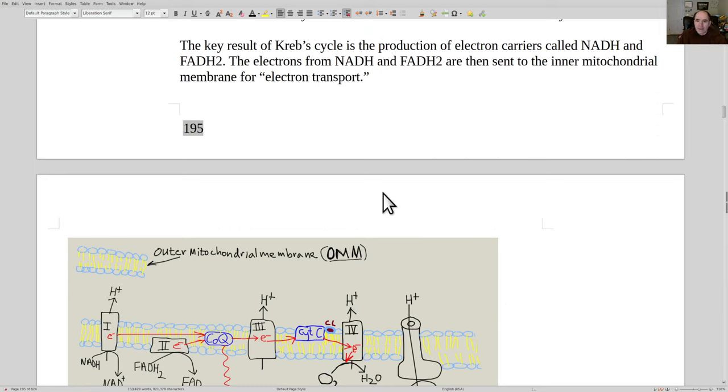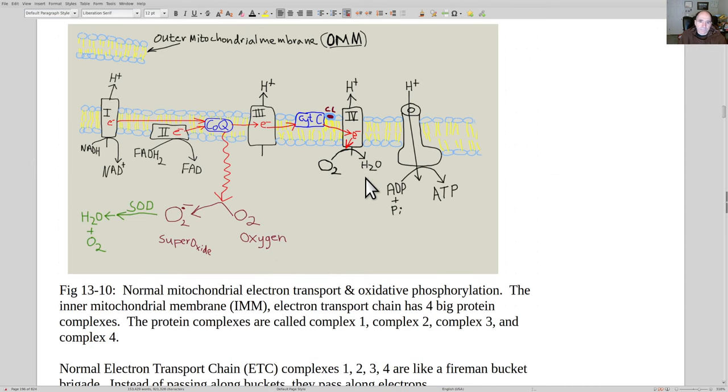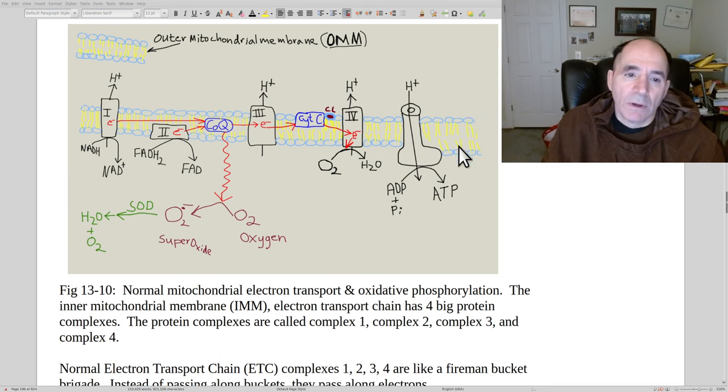The key result out of Krebs cycle is you make electron carriers called NADH and FADH2, and they're going to send electrons to the inner mitochondrial membrane. Here is the inner mitochondrial membrane, and this is where life on earth comes from. Basically, these are electron carriers 1, 2, 3, 4.